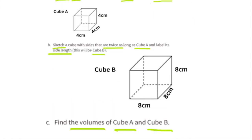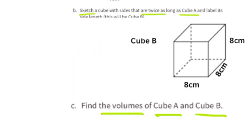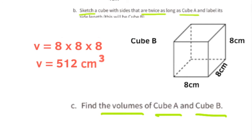Part C. Find the volumes of cube A and cube B. To find the volume, we multiply three side lengths: volume equals length times width times height. For the smaller cube, the volume is 4 times 4 times 4, which equals 64 cubic centimeters. For cube B, the larger cube, the volume is 8 times 8 times 8, which equals 512 cubic centimeters.